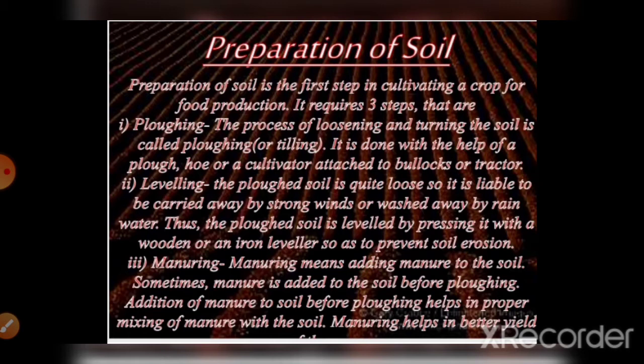In the preparation of soil step, we prepare the soil for the sowing of seeds. When we leave the soil for some days, all the pores get closed. The first step to open them is ploughing. Ploughing means loosening and turning of the soil. We loosen and turn the lower part of the soil, which is moist, bringing it to the upper surface. This is important because the water content is in the lower part of the soil.